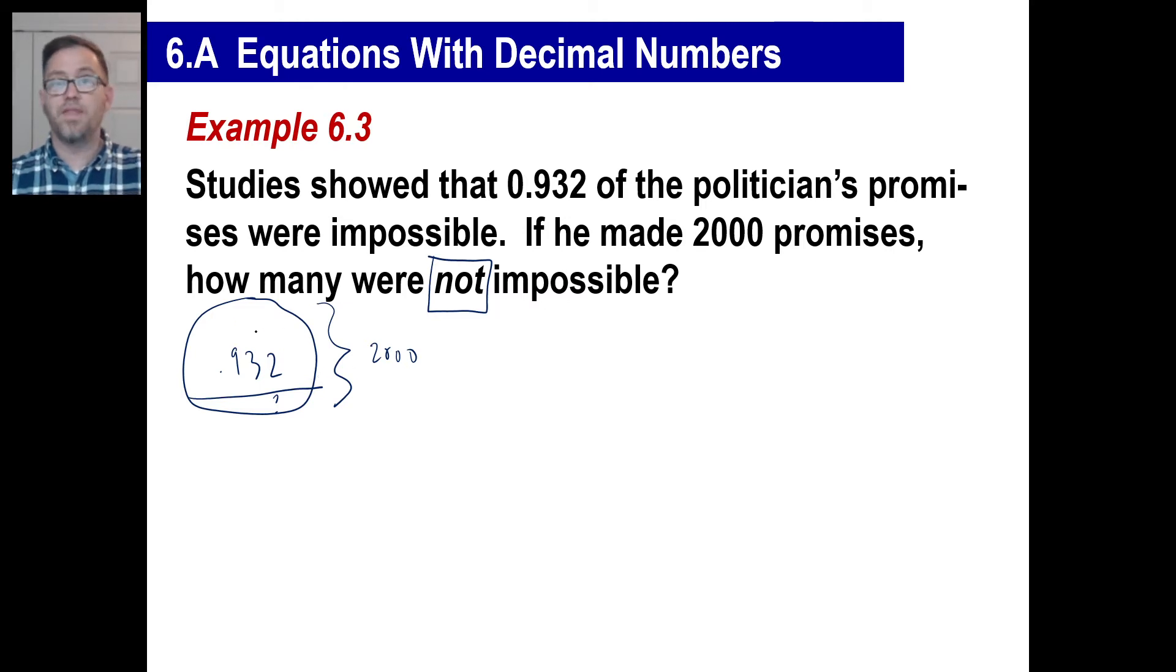In other words, this...and then once we find that number, we'll subtract that from 2,000. That makes sense? Because we're going to find out this part, not that part.